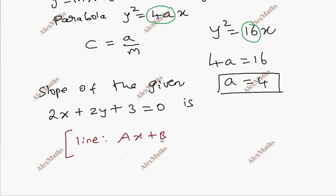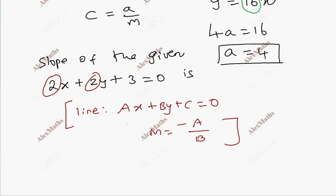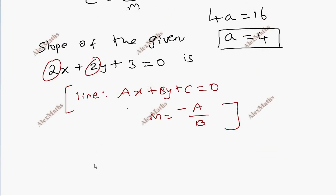For a line ax plus by plus c equal to 0, the slope is minus a by b. So the slope of this line is minus 2 by 2 which is minus 1.